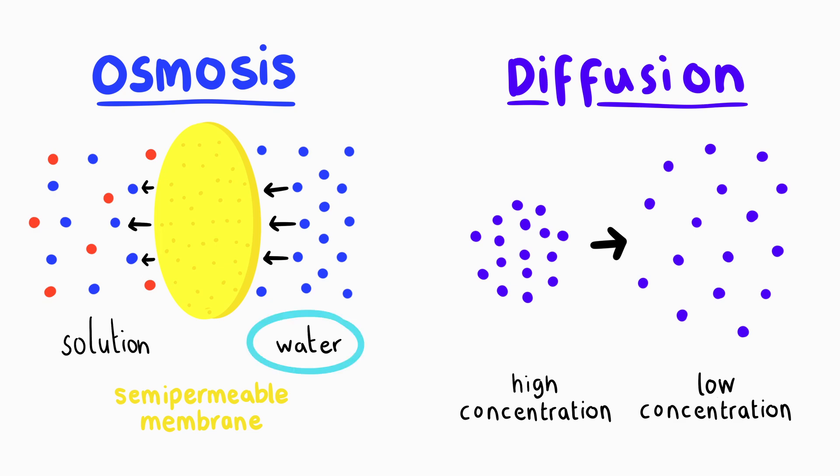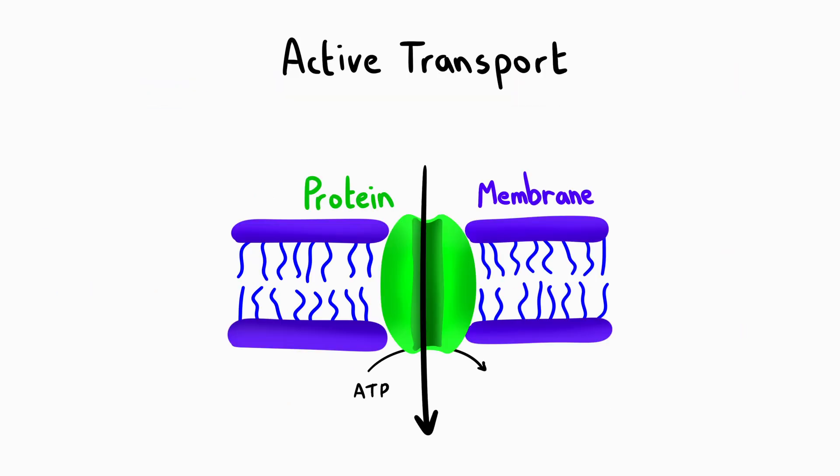Water is constantly moving into and out of cells by osmosis. Now let's move on to active transport. Unlike diffusion and osmosis, which are passive processes driven by concentration gradients, active transport requires energy in the form of ATP.